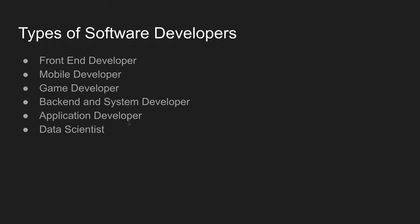For example, we use Google ads. Google shows us relevant advertisements based on our activities. Data scientists analyze your data and your daily patterns to serve you interesting, relevant ads. This is an example of data scientist job roles.